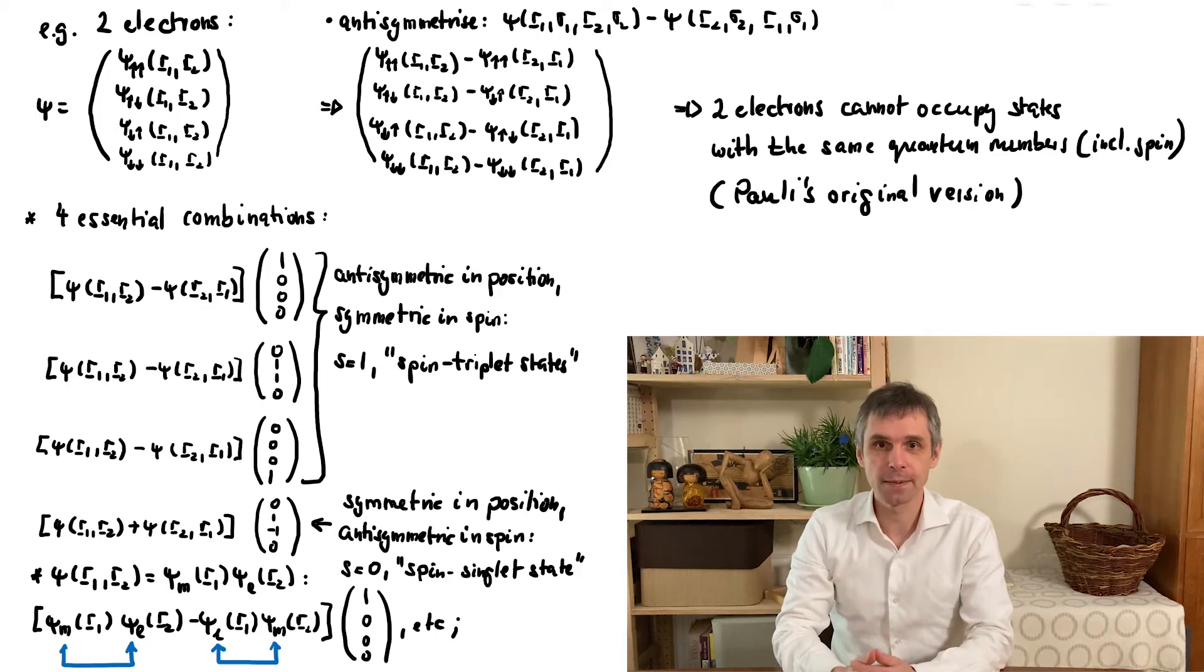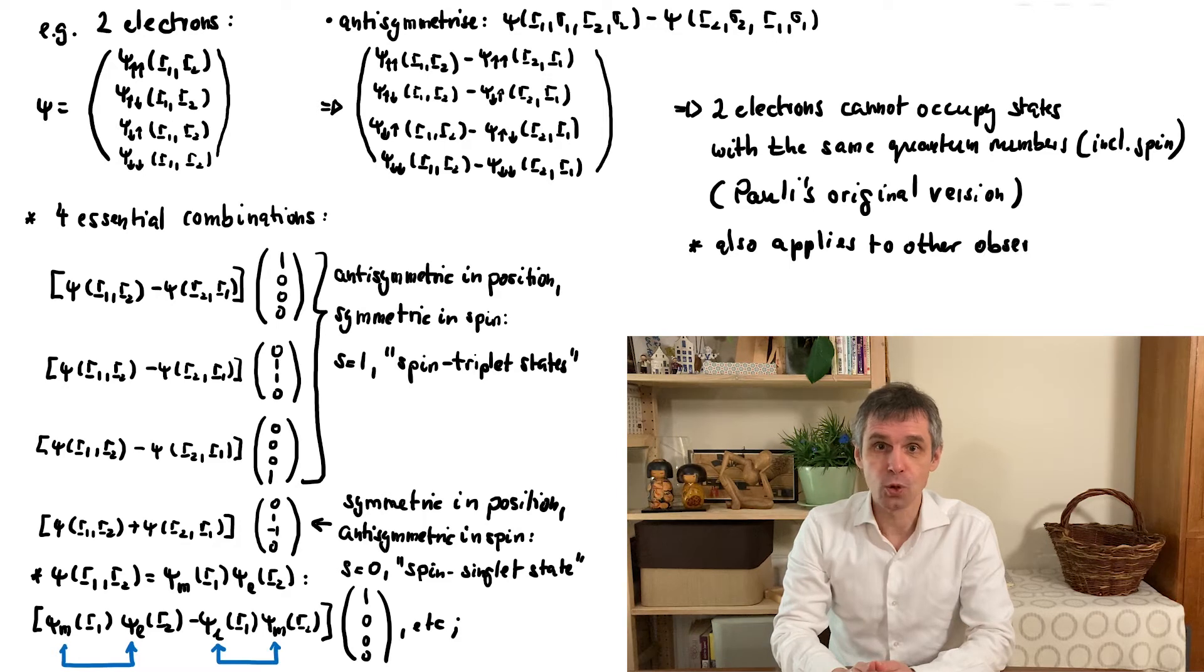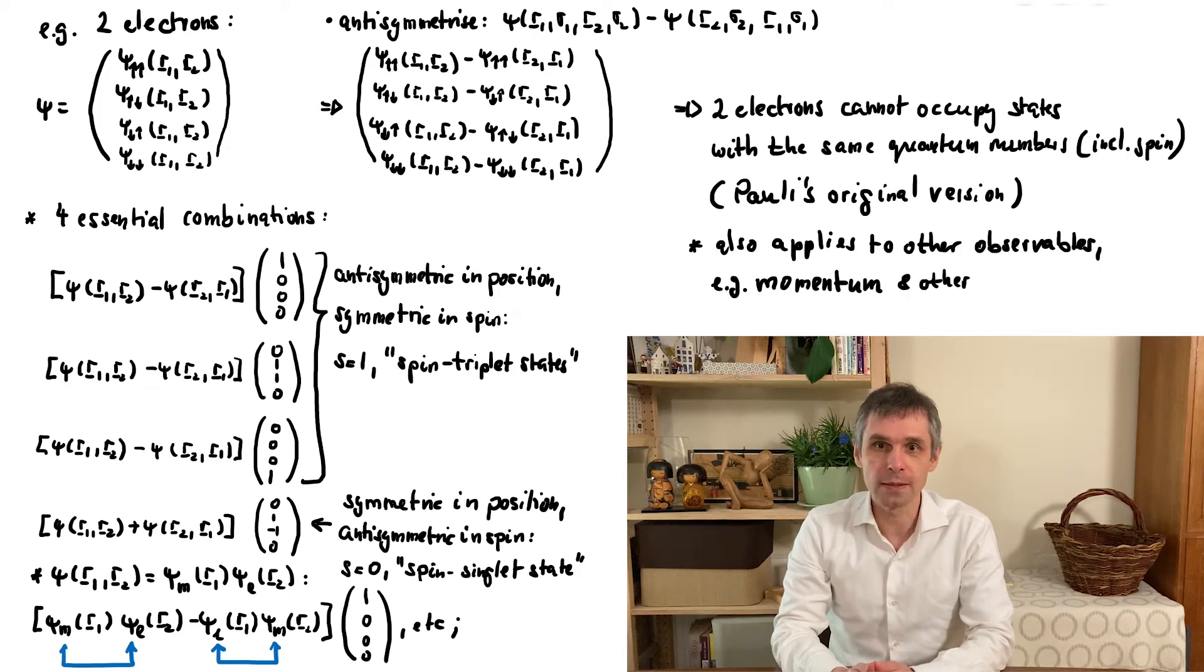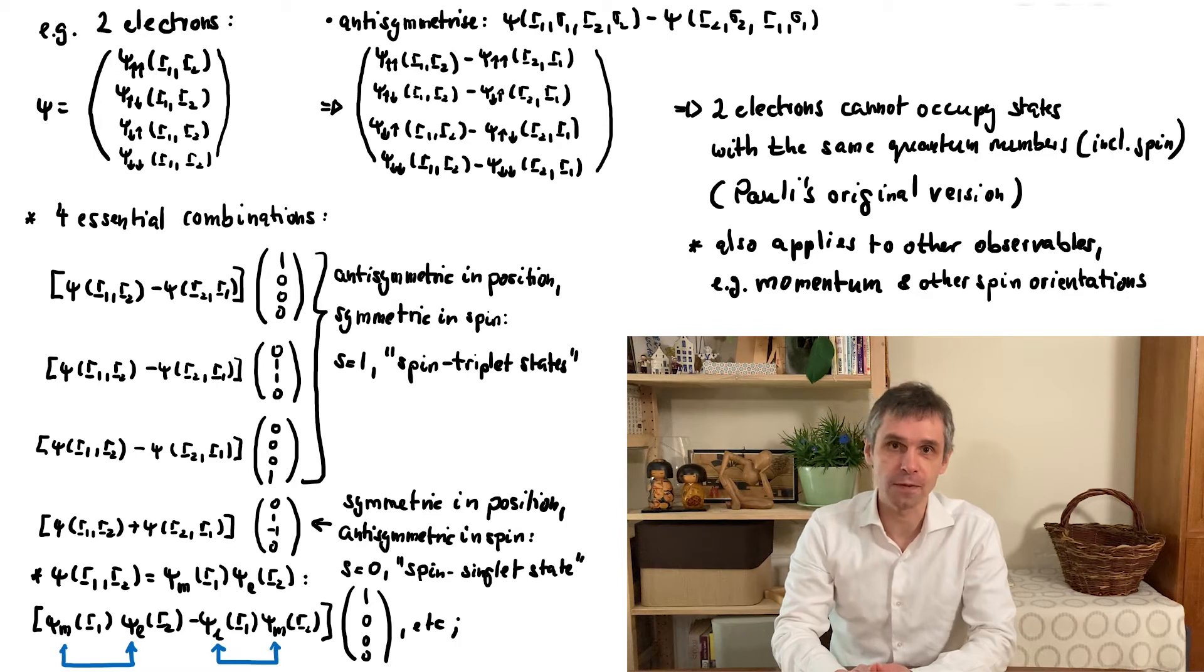Instead of formulating the principle in this more specific way, we can use these considerations to generalize the Pauli exclusion principle: no two indistinguishable fermions can be observed having the same values for a complete set of simultaneous observables. So we can replace position by momentum, and spin up or down by the spin aligned into any direction in space. The spin singlet and triplet states of two electrons are already our first example, but let us now turn to more specific ones.